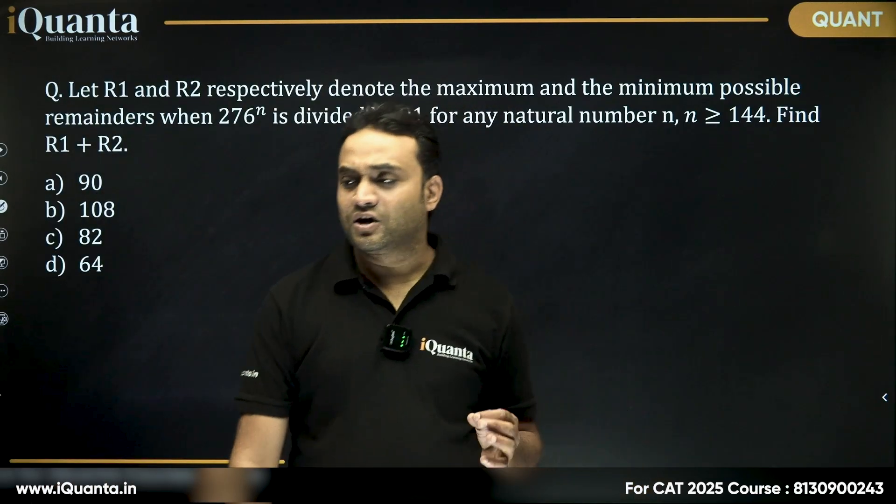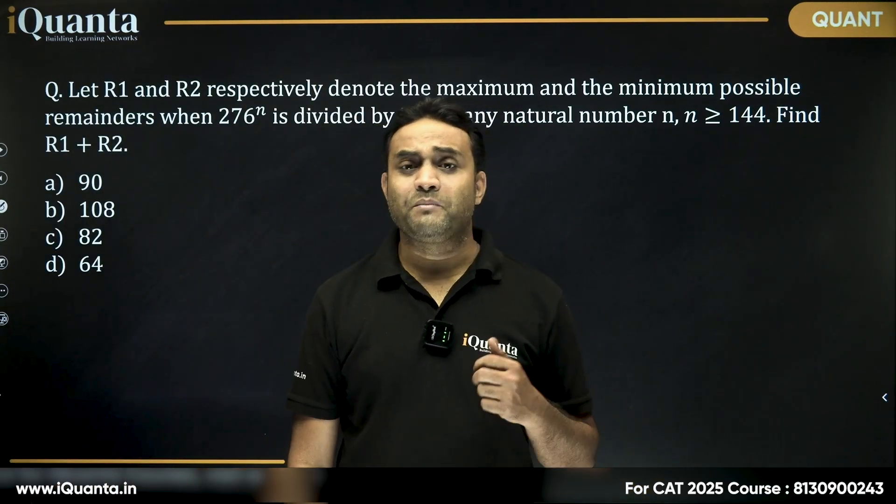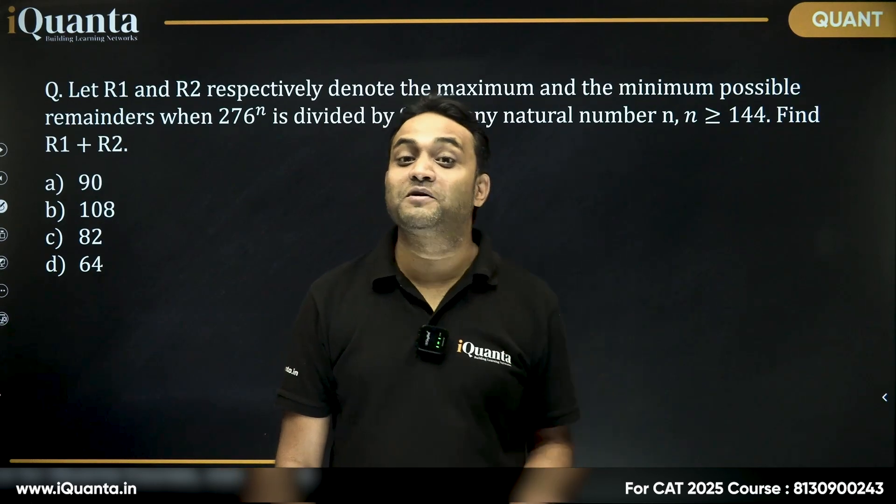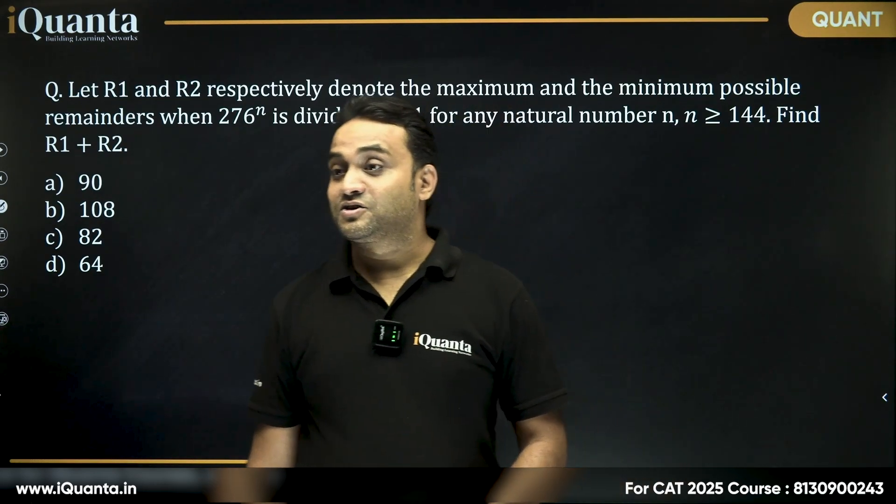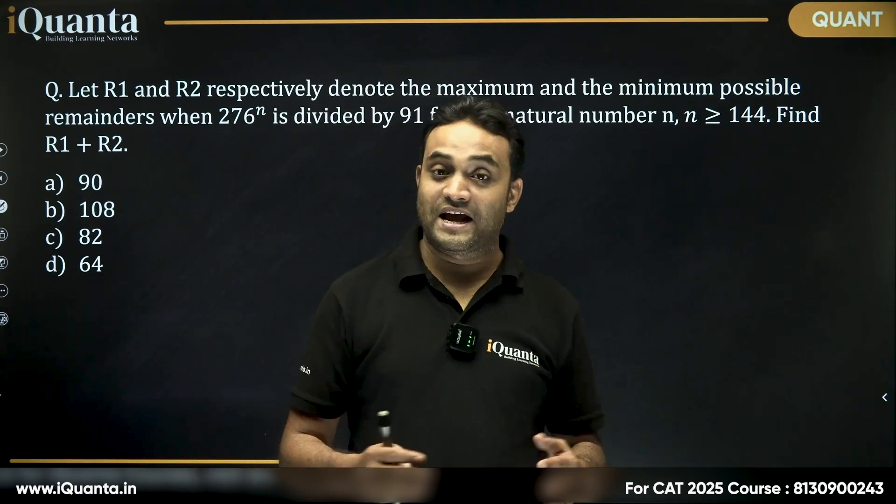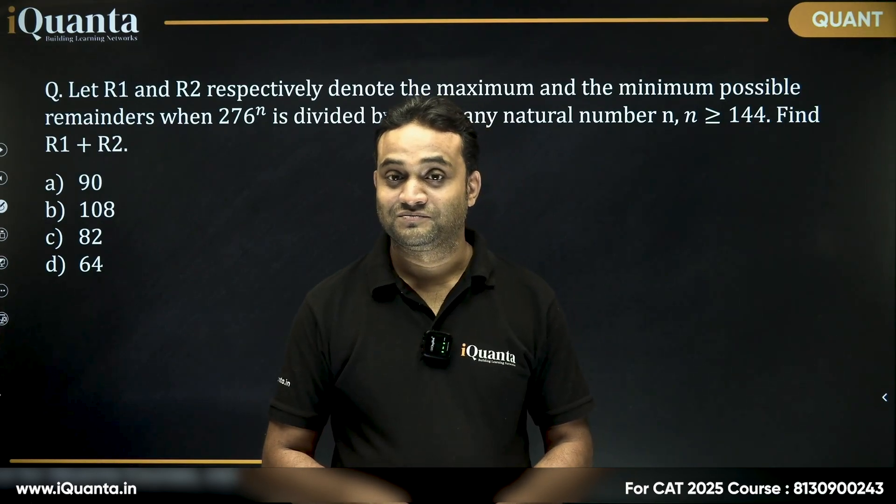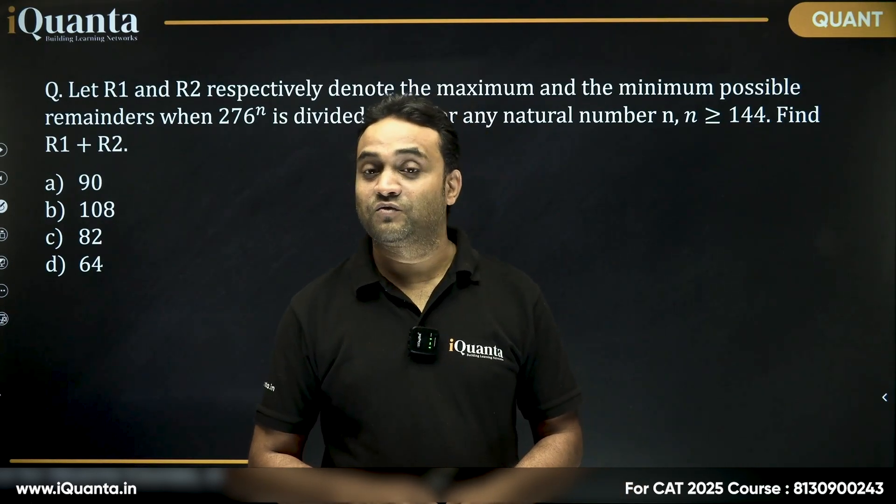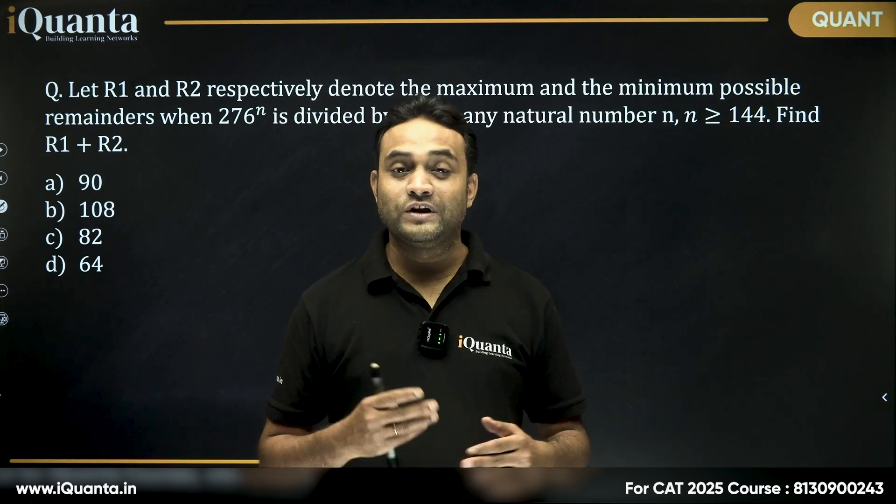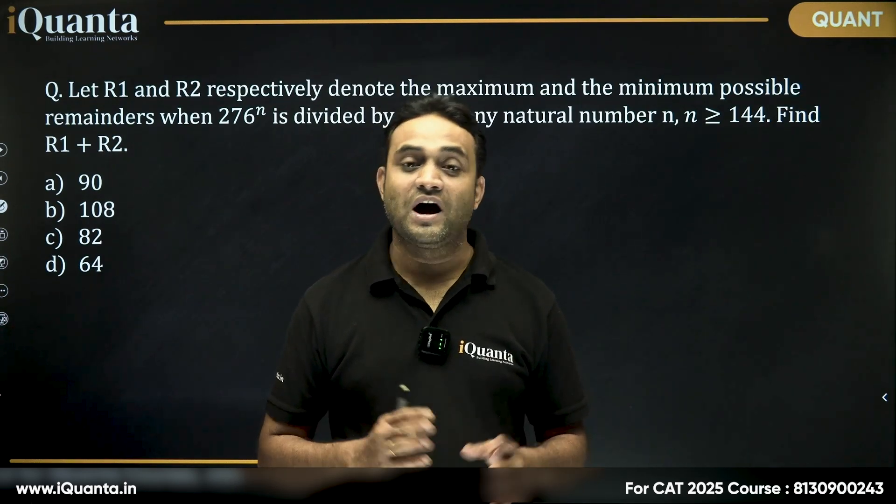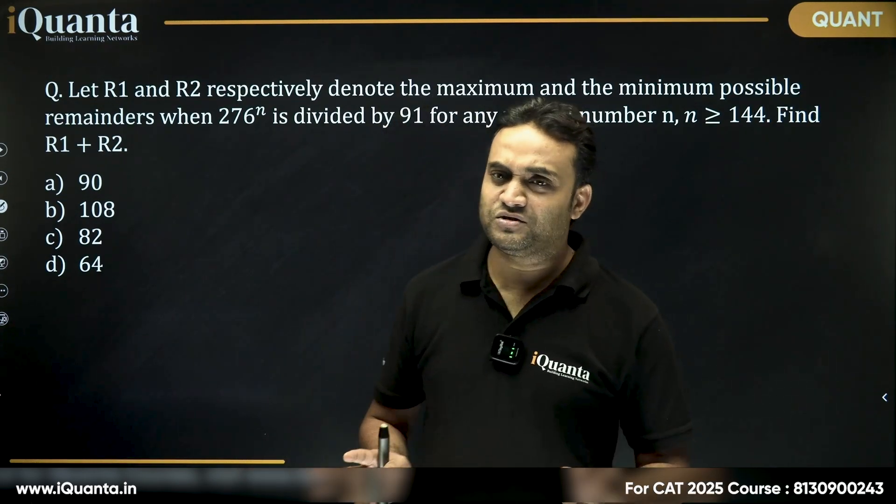Let R1 and R2 respectively denote the maximum and minimum remainders when 276 to the power n is divided by 91, where n is always greater than or equal to 144. Then what will be the value of R1 plus R2? How do we solve this question?